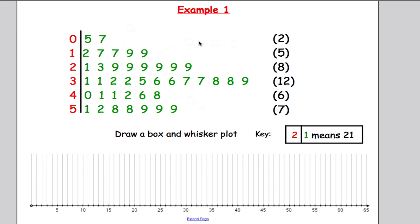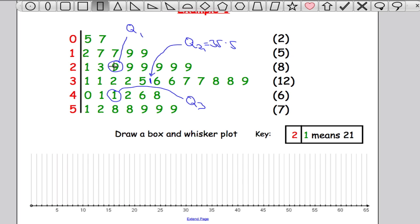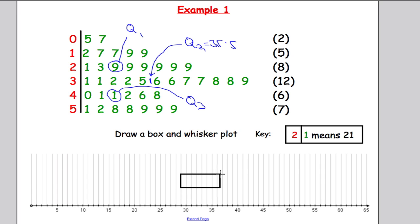So if you remember the previous video, we had this stem and leaf diagram, and this time, what we're going to do is we're going to draw a box and whisker plot using this data. So if you remember how to calculate Q1, you would have worked out that Q1 is going to be 29, Q2 is going to be 35.5, and Q3 is going to be 41. So let me just summarize this in our box plot for now. So I'm going to do Q1, which is 29, and Q3, which is 41. So let's find 29, which is here. And we've got to go up as far as 41. So drawing a nice box like that.